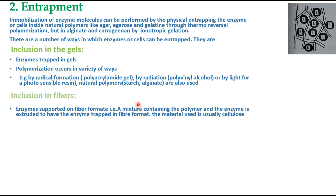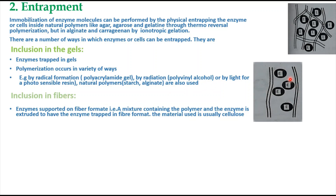The second way is inclusion in fibers, where entrapment occurs in tube-like fiber structures through which the substrate flows. The enzyme is supported in a fiber format — a mixture containing the polymer and the enzyme is extruded to have the enzyme trapped in the fiber, usually using cellulose materials.